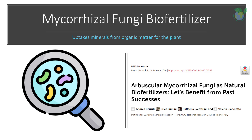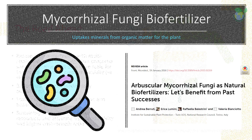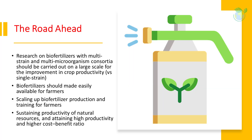The impacts include improving the ecosystem as biofertilizers improve soil structure and aggregation. The past decade has seen research on biofertilizers with multi-strain and multi-microorganism consortia carried out on small trial scales. More could be done on a large scale for improvement in crop productivity versus single strain. The global economic crisis is now forcing growers to understand the potential of sustainable agricultural systems and reducing the input of phosphorus. Efforts are being made to make biofertilizers easily available for farmers, including scaling up production and training.